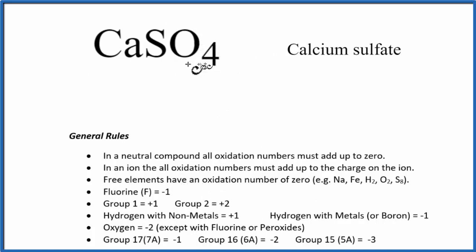So calcium sulfate, that's a neutral compound. There's no plus or minus like we have with ions up here. Since it's a neutral compound, all the oxidation numbers add up to zero. So that'll help us figuring out the oxidation numbers on each element here in CaSO4.